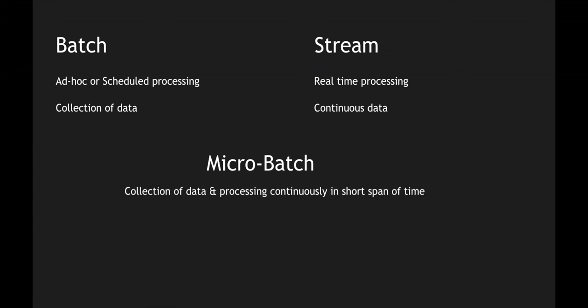There is also a new concept called micro-batching, which gives you the best of both worlds. It involves collecting data and processing it continuously in a short span of time, incorporating scheduled processing and collection of data along with real-time and continuous processing. Micro-batches are a combination of batch and streams — you can process data instantaneously but batch it for a short span of time, compared to traditional batches which run over a longer period.